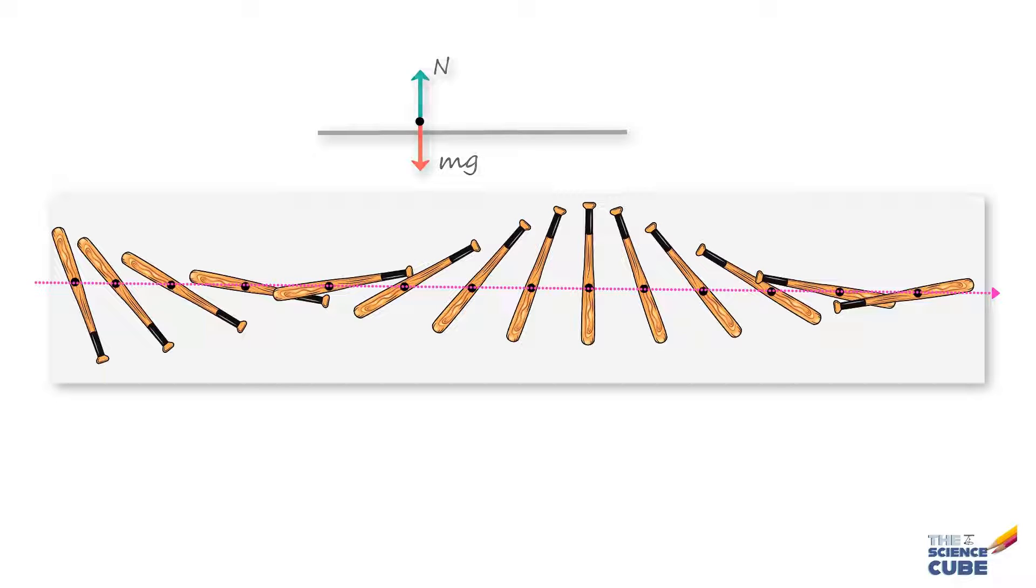So here we could say that while the force of gravity is acting on every particle of this bat, we can simplify our calculations by assuming that the entire force of gravity is acting through this point. So now let us get a little mathematical about how we can find the location of the center of mass of a system of particles.